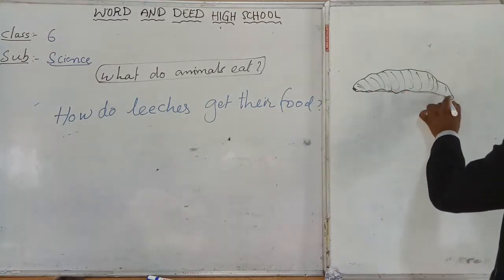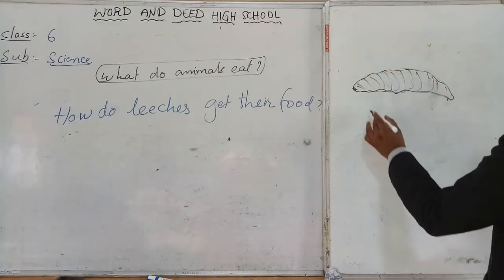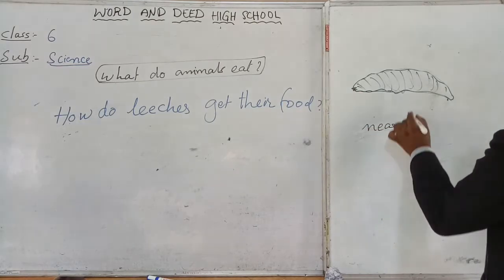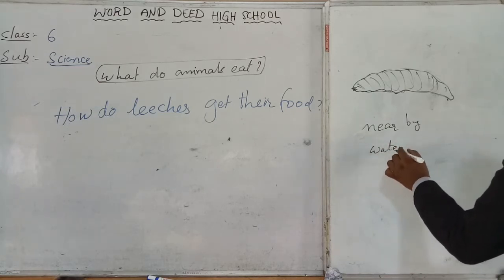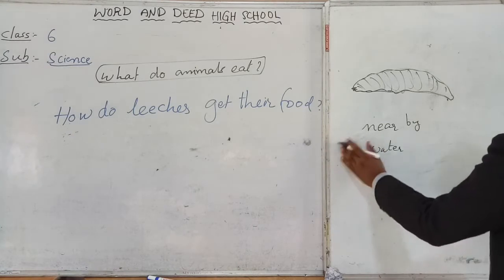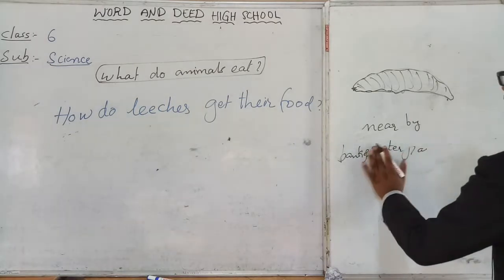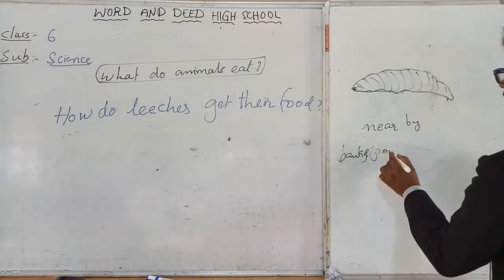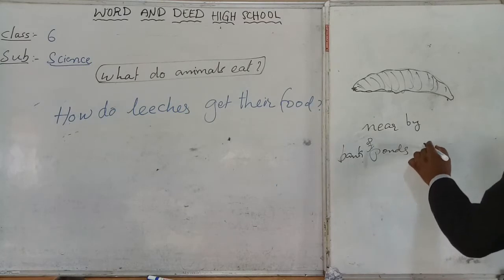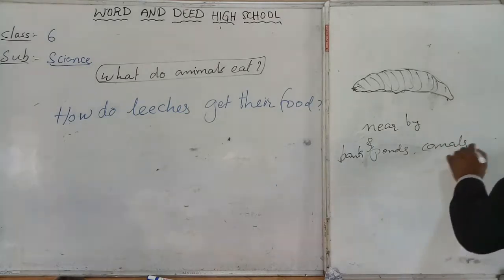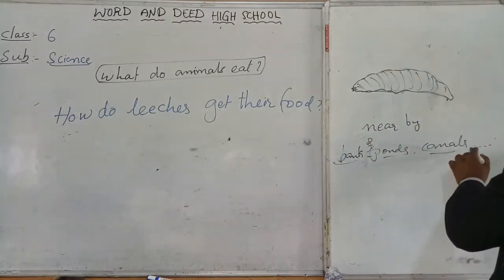If you see the diagram of leeches, you can see its abdomen surface, its back surface. Leeches live nearby water — near the bank of water ponds, canals, et cetera.